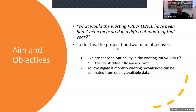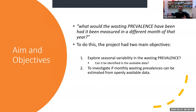The second objective was to investigate if monthly wasting prevalences can be estimated from publicly available data — looking at each individual month, and if there isn't data collected in that month, can we come up with an estimation given previous months in other years where we have measures, and also months leading up to or after that particular month where data has been collected? So we're trying to gap-fill using this modelling approach.